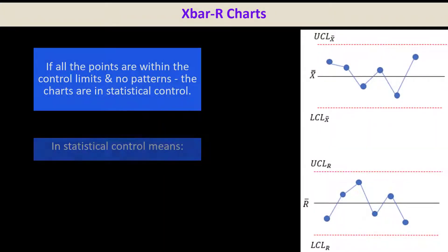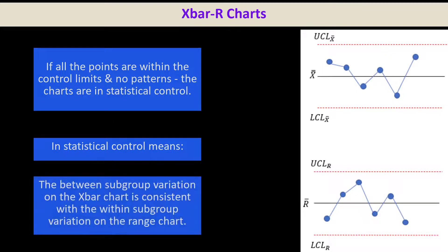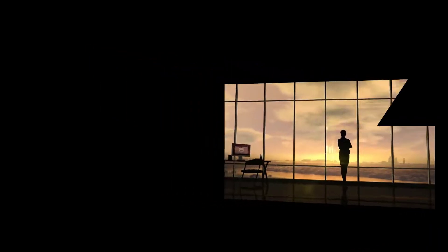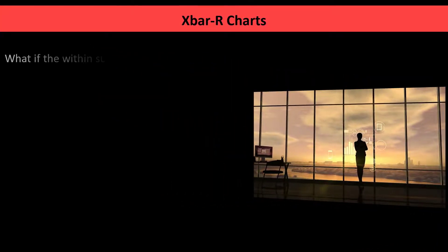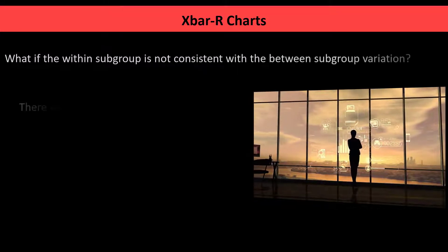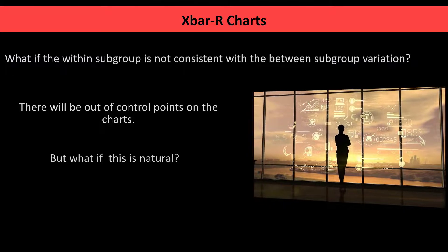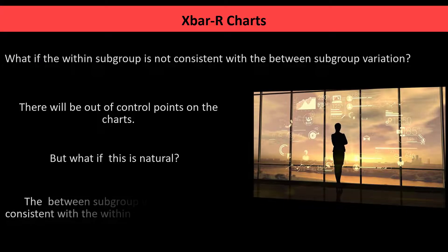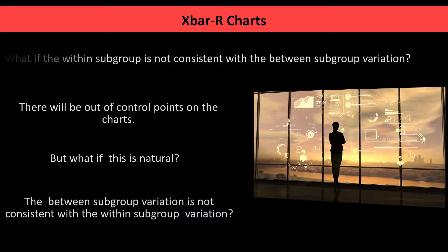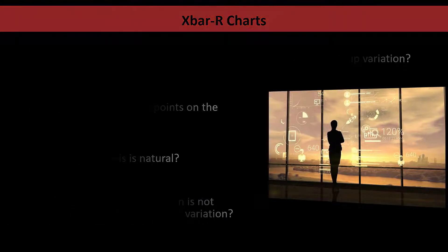If all points are within control limits and there are no patterns, the charts are in statistical control. That means the between subgroup variation on the X-bar chart is consistent with the within subgroup variation on the range chart. So if you're in control, you're balancing the between and within subgroup variations. But if the within subgroup variation is not consistent with the between subgroup variation, you're going to have out-of-control points.